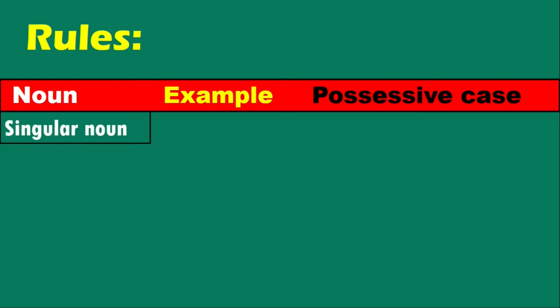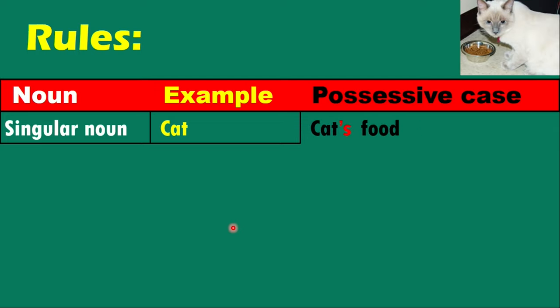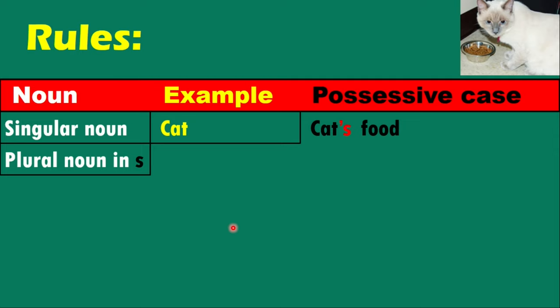There are some rules. When the possessor noun is singular, for instance 'cat' — it is a singular noun — the possessive case is cat's. For example, cat's food.